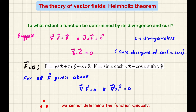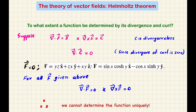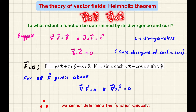In the description of electrodynamics, electric and magnetic fields are vector quantities. Vector derivatives appear in the equations — specifically the divergence of the electric field, divergence of the magnetic field, curl of the electric field, and curl of the magnetic field. This is the description of electrodynamics.